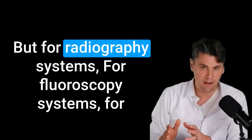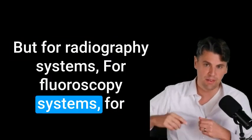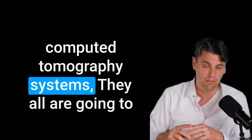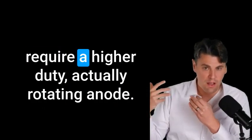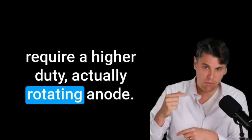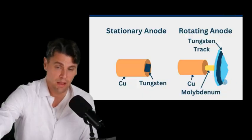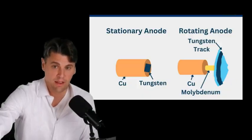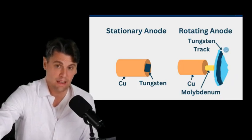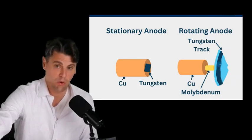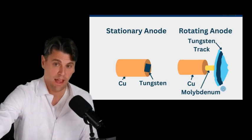But for radiography systems, fluoroscopy systems, for computed tomography systems, they all are going to require a higher duty, actually rotating anode. The electrons will come in, they will hit the anode, and then the x-rays will come out down here. So we can think about it, the heat can get distributed along this whole track for the actual anode.